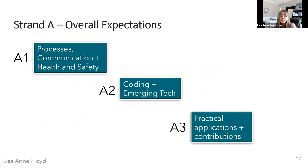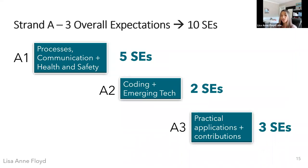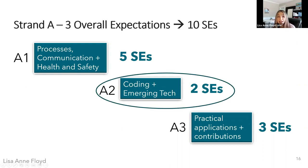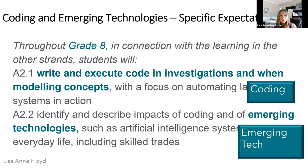These three overall expectations contain ten specific expectations. A1 has five specific expectations, the second overall expectation contains two specific expectations, and the third contains three. We're going to be focusing on A2, which has those two specific expectations related to coding and emerging technologies.